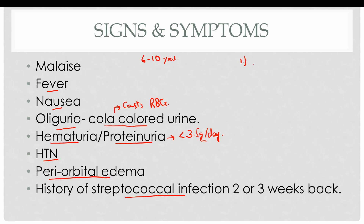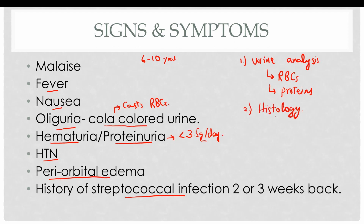The first lab test is urine analysis, which reveals the presence of red blood cells and proteins less than 3.5 grams per day. Definitive diagnosis is established on histological study of the biopsy. Since these diseases are immune-mediated, immunosuppressants such as steroids and methotrexate are used to treat these patients.